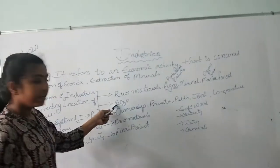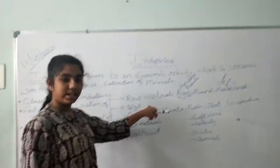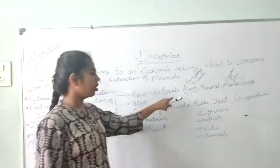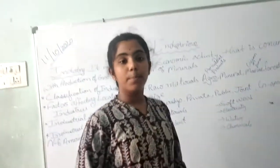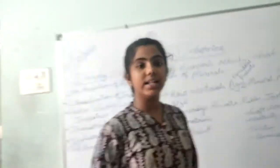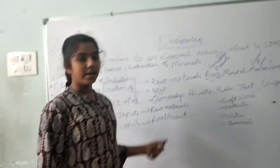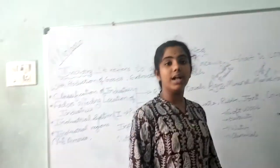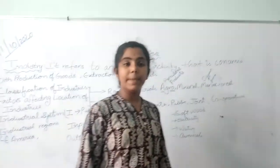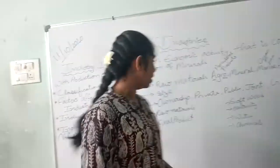Coming to size classification. In size we have 2 main types: small scale industry and large scale industry. Small scale industry is where goods are produced by hand, made by the hands of artisans. In large scale industry, the products are prepared by large machines and they are produced in large numbers.